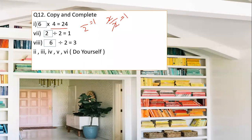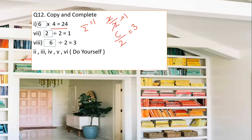Next: blank divided by 2 equals 3. Multiply the two known numbers: 2 × 3 = 6. So 6 is the answer. Verify: 6 ÷ 2 = 3. Yes, this is the correct answer.